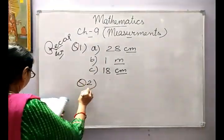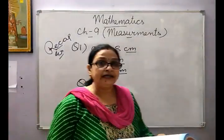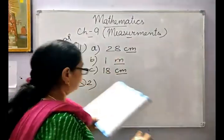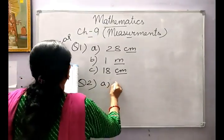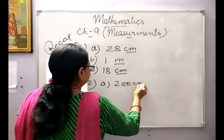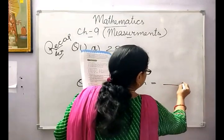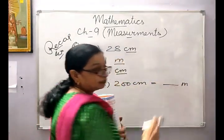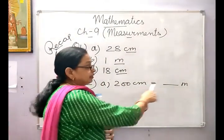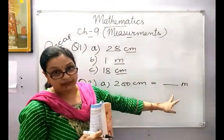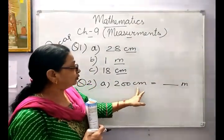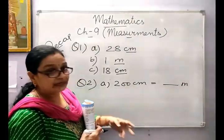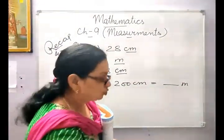Question number 2: complete the following conversions. A1: 200 centimetres is equal to dash metres. Here, centimetre is being converted into metre — smaller unit to higher unit — that means we will divide. We know that in 1 metre there are 100 centimetres, so we divide by 100. 200 divided by 100 gives the answer 2 metres.